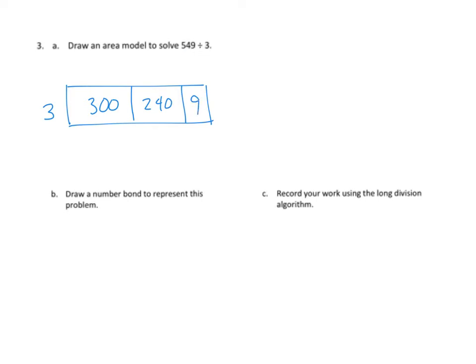So we use the area model this way. We can say, well, what number of hundreds times three is 300? Well, that's 100. What number of tens times three would equal 24 tens? Well, that would be eight tens, or 80. And how many ones times three would equal nine? And that's pretty simple. That's three. So we can use our area model to decide that 549 divided by three is 100 plus 80 plus three, or 183.